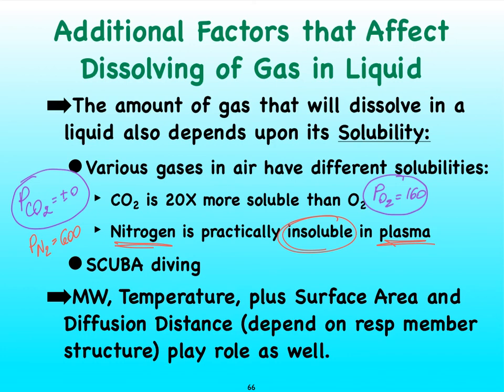Except when we go far below sea level. We learned before that when we go below sea level, for every 33 feet we're going to increase the pressure by another 760 millimeters of mercury.